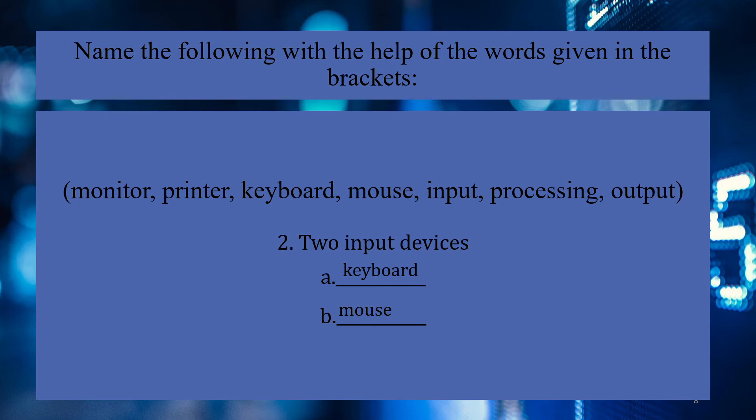The second input device is the mouse. We call the mouse an input device because we use it for drawing and for selecting items — for example, copying and pasting. So the two main input devices are keyboard and mouse.